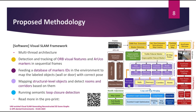As can be seen, the framework has a multi-thread architecture. In the tracking thread, it detects and tracks ORB visual features in the scene, as well as ArUco markers present in sequential frames. In another thread called the Semantic Analyzer, it feeds a database of marker IDs in the environment to map labeled objects — walls and doors — with the current pose information. The framework maps structural-level objects and detects rooms and corridors based on these objects, and can also run semantic loop closure detection for better map refinement. To save time, you can read more about the framework by scanning the QR code shown here.